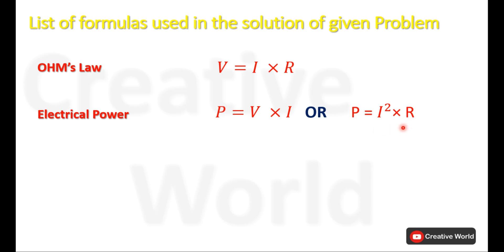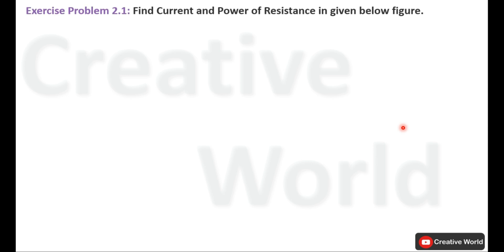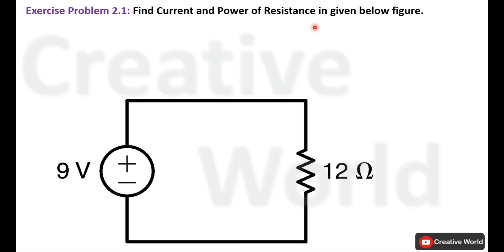Now move towards the problems. Exercise problem number 2.1: find current and power of resistance in the given figure. This is the circuit diagram of the given problem. We have to find the value of current through this resistance and the amount of power dissipation from this resistance.